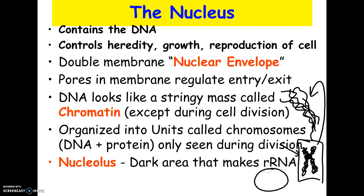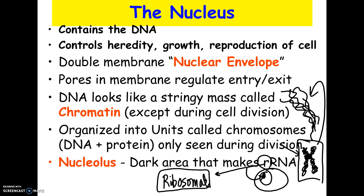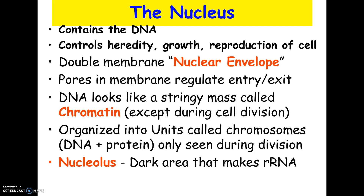Also in the nucleus is a dark area called the nucleolus. There's the cell, there's the nucleus, and inside is the nucleolus. Keep in mind that the nucleolus does not have a membrane around it — it's just a dark area, not another membrane-bound organelle. What it does is make ribosomal RNA, so the nucleolus is basically assembling the parts that will compose the ribosomes.